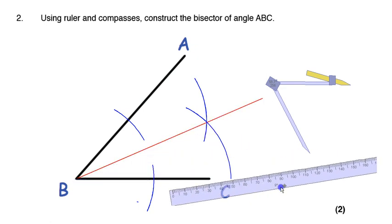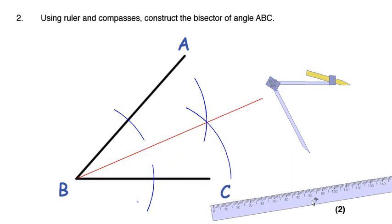And now, get my ruler out of the way. There's a red line to go through them both, and that is the angle bisector. Done.